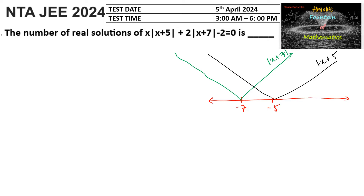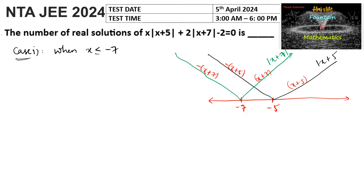Let us assume three cases. Case 1: when x is less than negative 7. In this region, both graphs are towards the left side, which means mod of x plus 5 will be negative of x plus 5, and mod of x plus 7 will be negative of x plus 7.